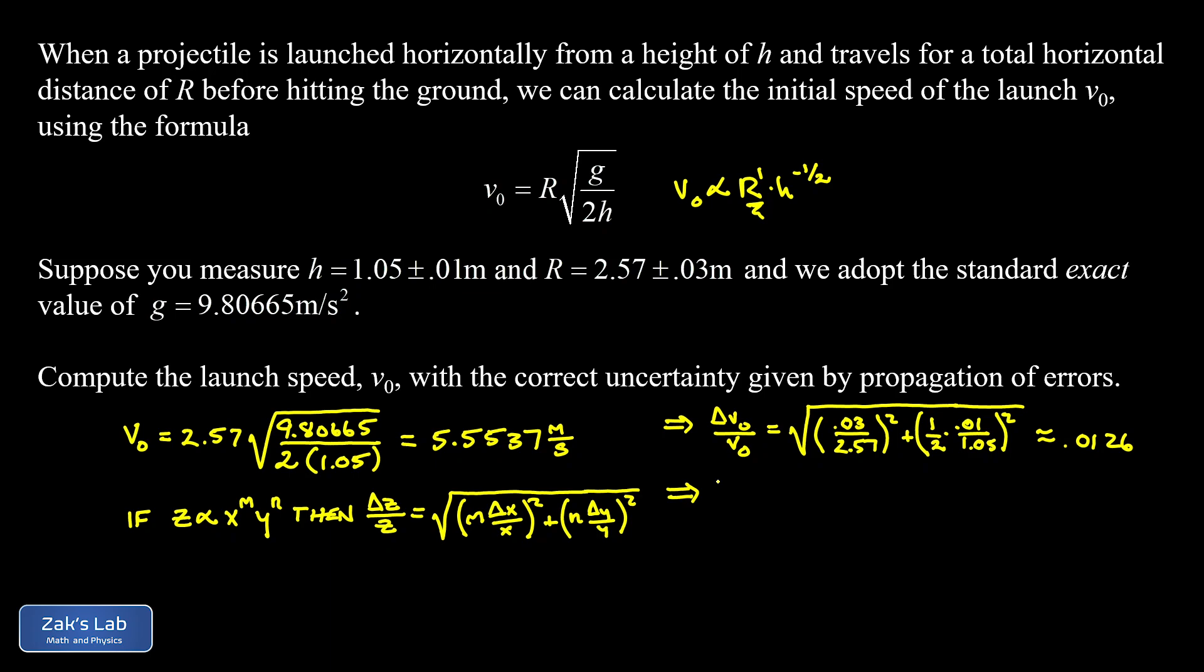And when I smash those numbers into a calculator, I get something like 0.0126. And we still need to figure out what the actual uncertainty in the velocity is. So what we're looking at here is delta v₀ over v₀. That's a relative uncertainty. So when I look at that 0.0126, that actually means there's about a 1.26% uncertainty in the velocity.